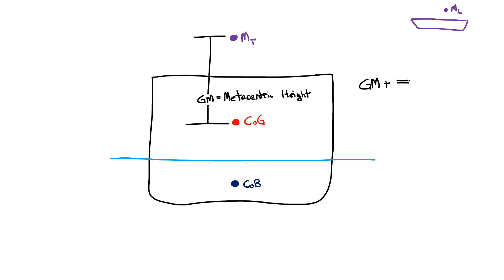If the metacentric height is positive, the moments that develop when the ship is inclined are righting moments and the ship is stable. If the metacentric height is negative, and therefore the transverse metacenter is actually sitting somewhere below the center of gravity, the moments that develop are upsetting moments and the ship is unstable.